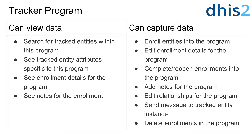Note that there is a close relationship between tracked entity types and tracker programs when discussing the CanView data sharing setting. In order to perform the functions associated with the CanView data sharing setting within a program, at minimum the CanView data sharing setting for the tracked entity type which the program uses must also be applied for the same users or user groups accessing the program. The user must also have the associated authorities within their user role in order to interact with the tracker program in the intended manner.